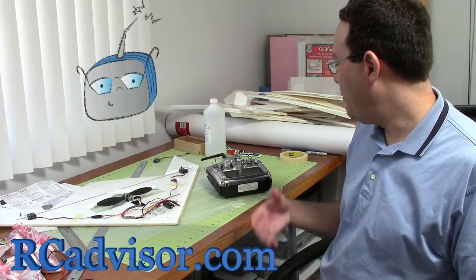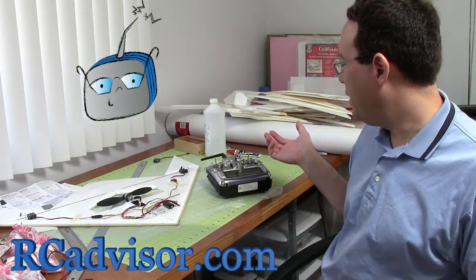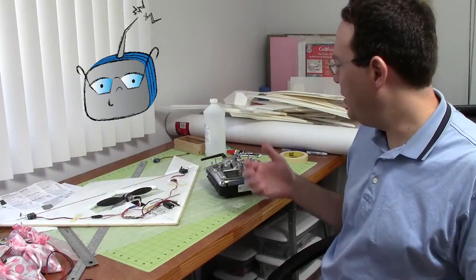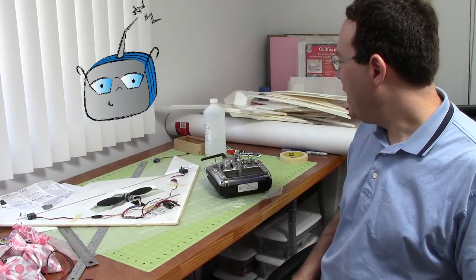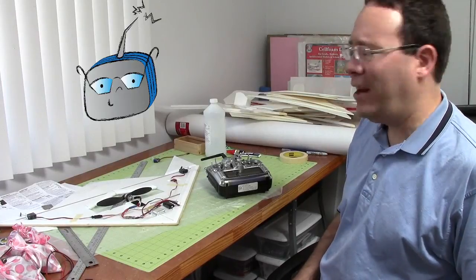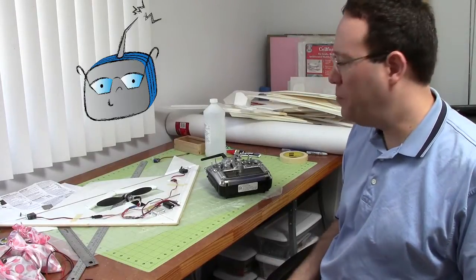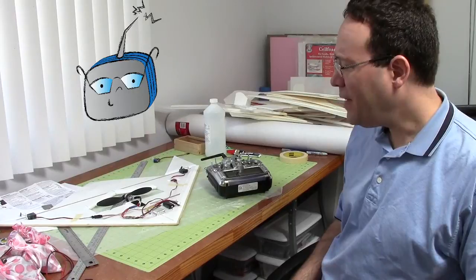But the transmitters usually come with nickel metal hydride batteries, NiMH. And those batteries have a couple of problems, but the main problem with those batteries is that the self-discharge rate is really high.